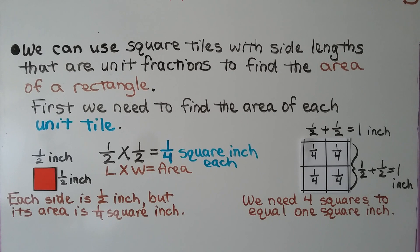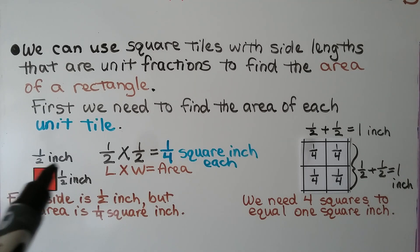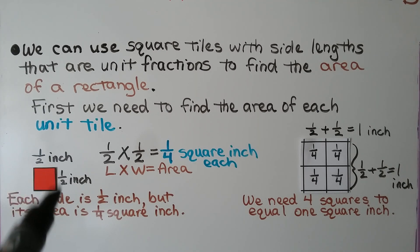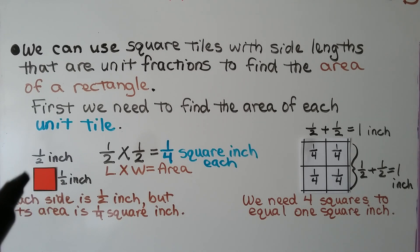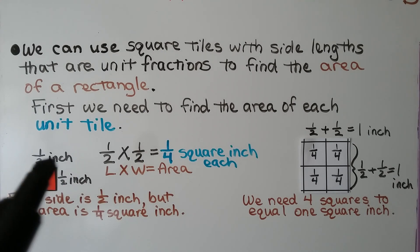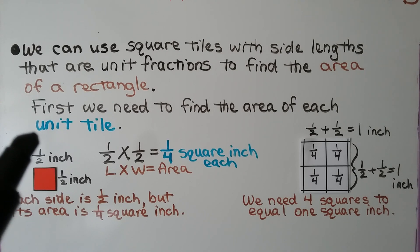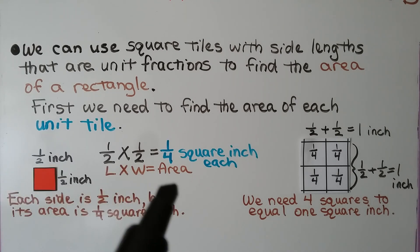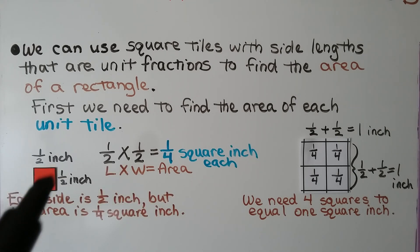We can use square tiles with side lengths that are unit fractions to find the area of a rectangle. First, we need to find the area of each unit tile. If this tile is one half inch this way and one half inch this way, it's a square and that means each side is one half inch. We would find one half times one half — length times width — to get the area of this little red square. And one half times one half is one fourth.